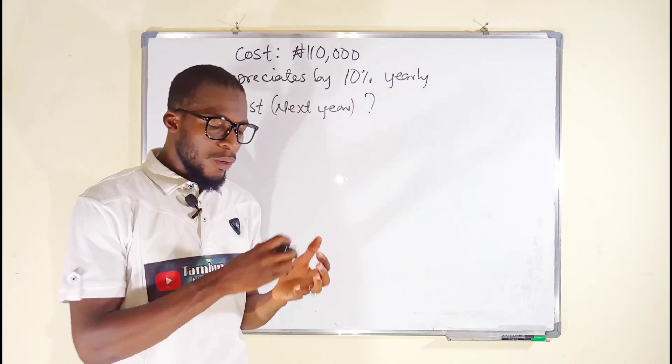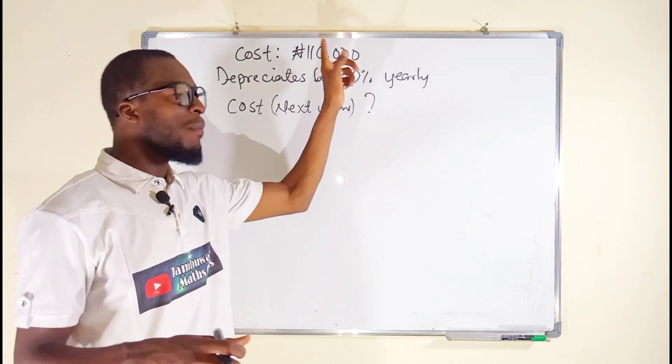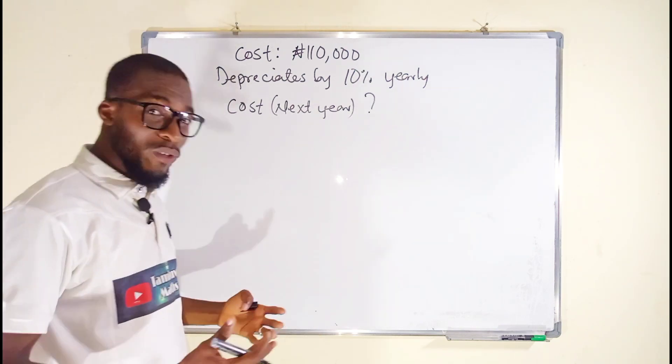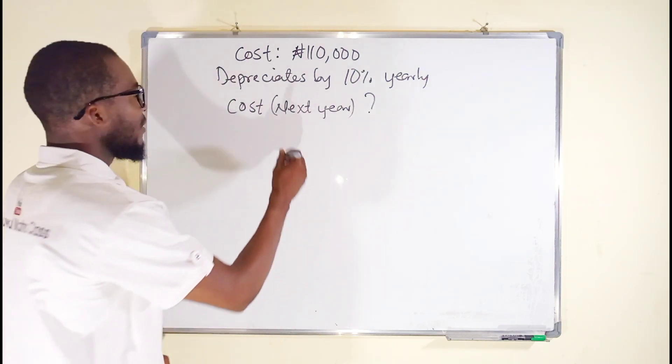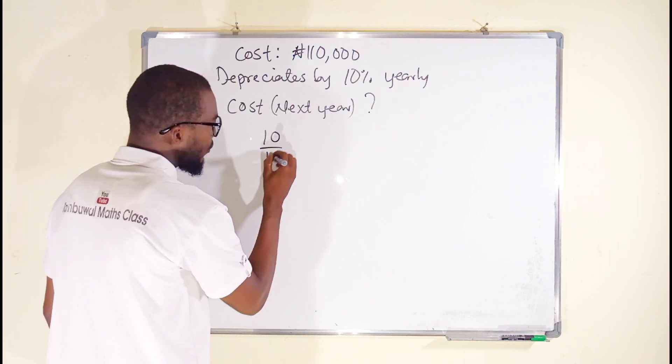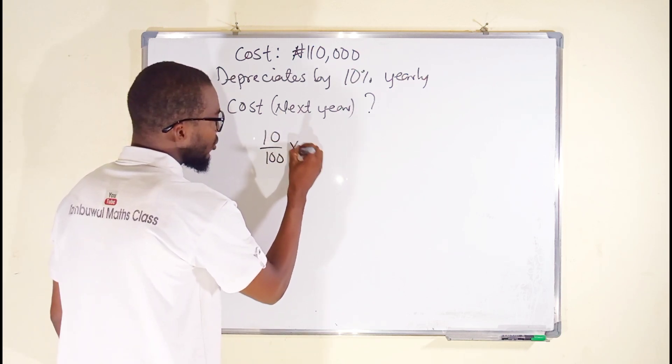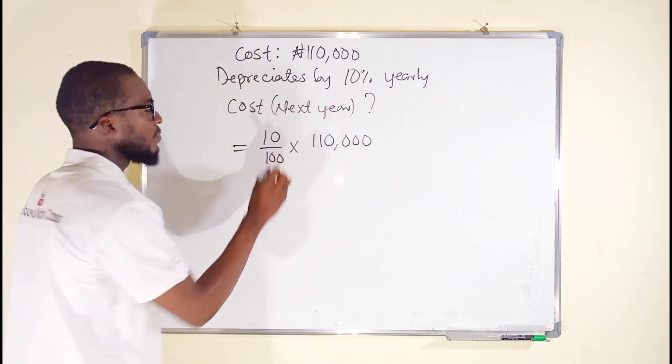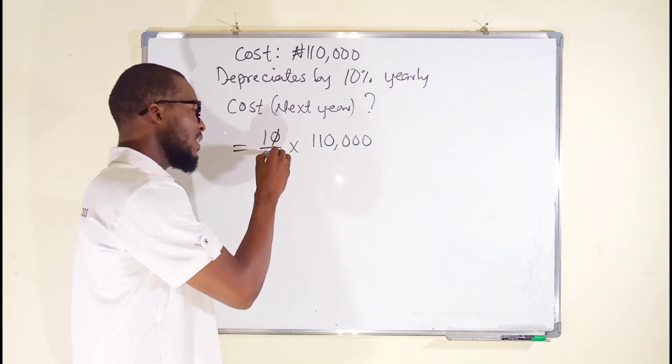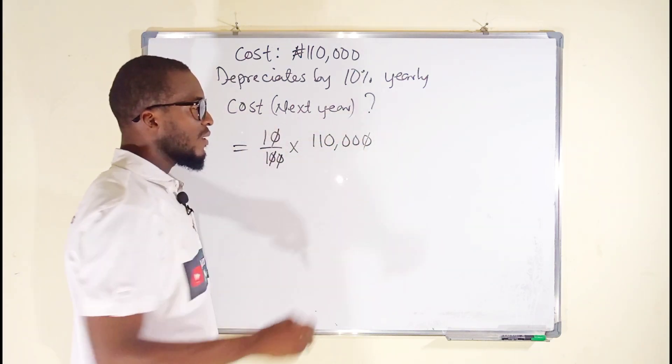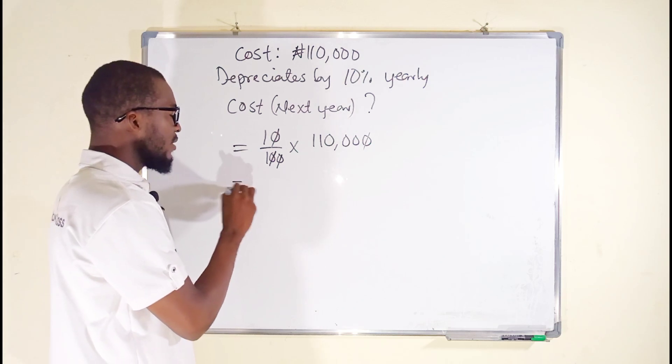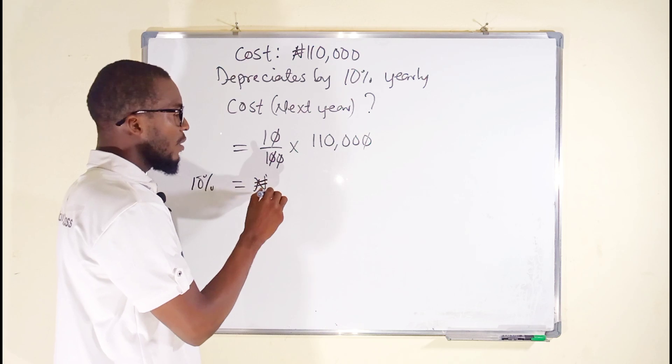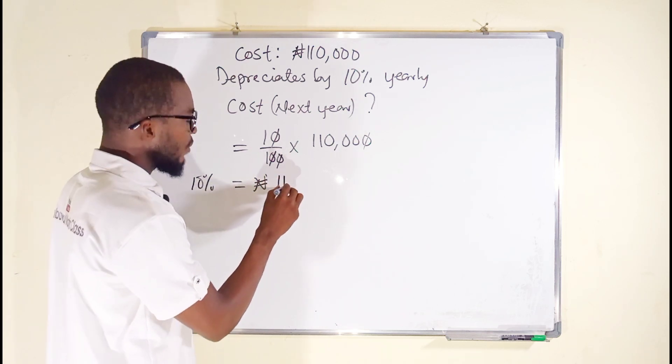Whatever we obtain, we subtract it out of the main amount, that is the cost or principal amount. Whatever is left is the cost next year. So 10 percent can be written as 10 divided by 100 times the main amount, which is 110,000 naira. This zero will take care of this zero, this zero will take care of this other zero, and you can see the 10 percent is 11,000 naira.